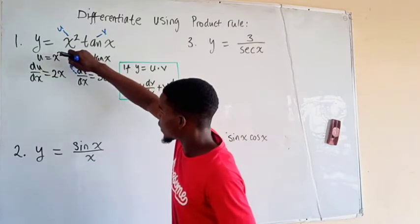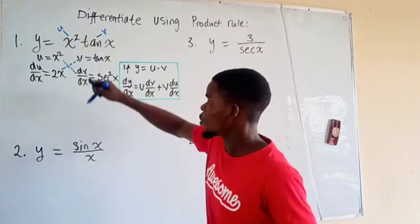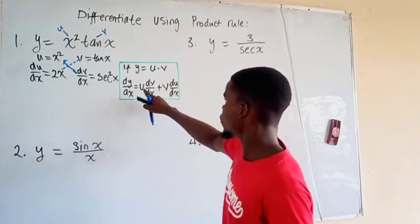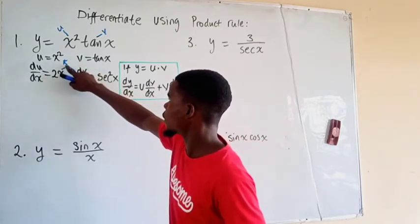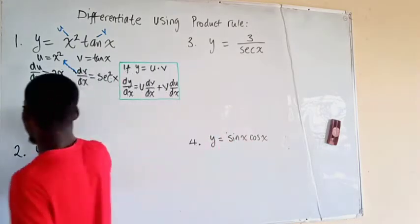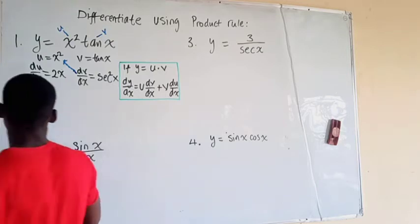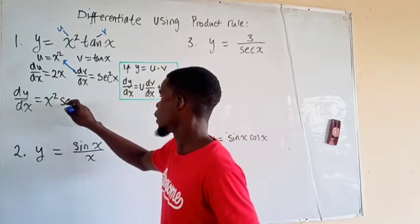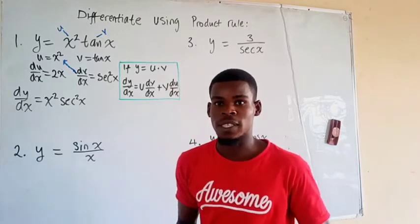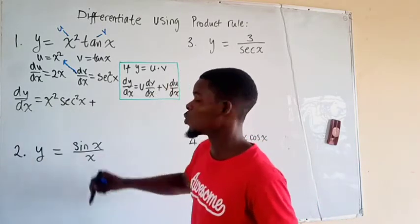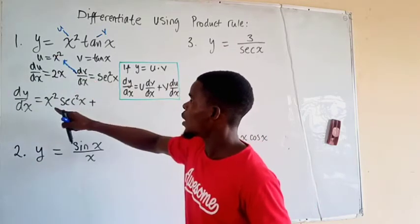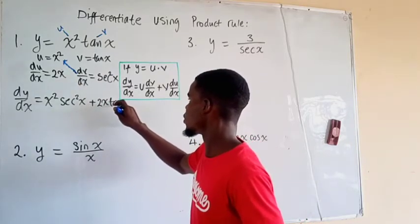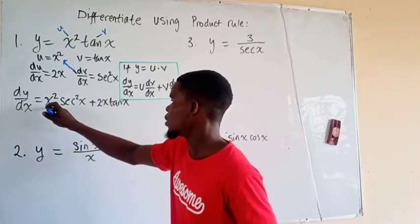Now we multiply the diagonals together. We multiply u times dv/dx — that is x squared times secant squared x — and add it to dv/dx... the other diagonal, which is 2x times tangent of x. So dy/dx equals x squared times secant squared x plus 2x times tangent of x. This is the derivative of the first function.